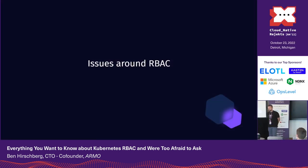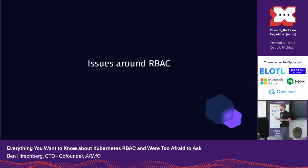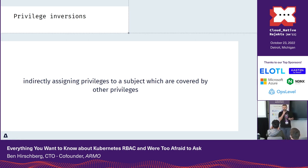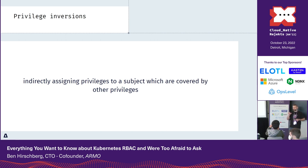That was the first half of the discussion, getting to the same level of understanding about Kubernetes RBAC. Now let's talk about issues around RBAC and things we see out in the wild. The first thing I want to talk about is what I call privilege inversions. Not many people have heard this term — and it turns out when I searched Google, nothing came up matching my understanding.